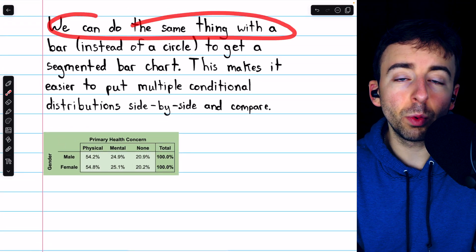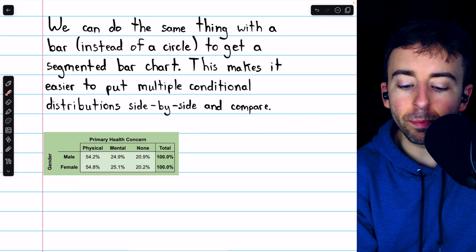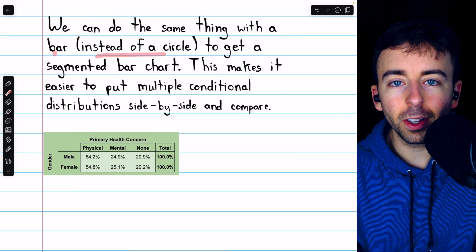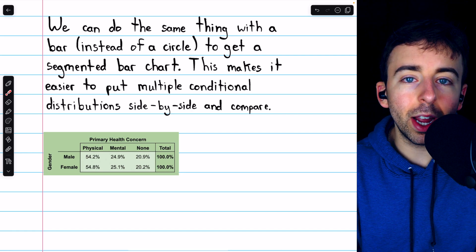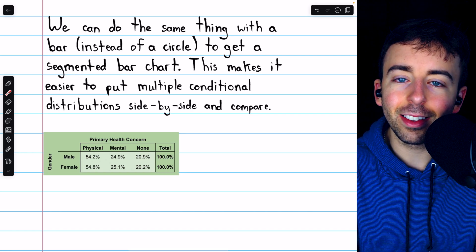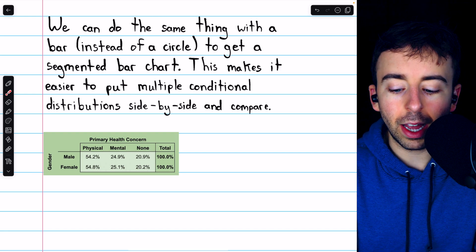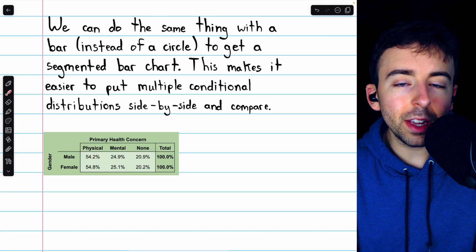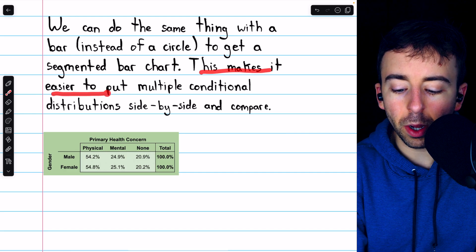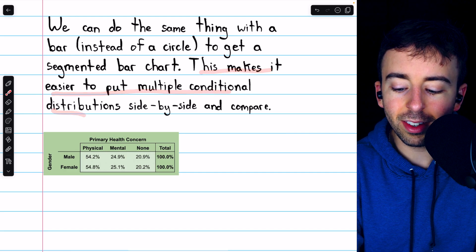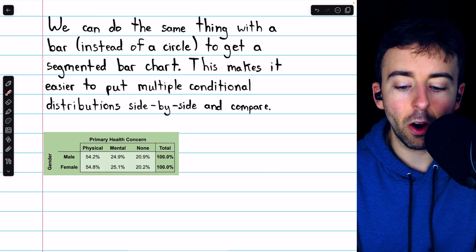We can do the same thing as with a pie chart, but with a bar instead of a circle, to get what's called a segmented bar chart. In the same way that a pie chart is divided into slices, a segmented bar chart is divided into segments. One of the advantages of a segmented bar chart is that it makes it a little easier to put multiple conditional distributions side by side and compare between them.